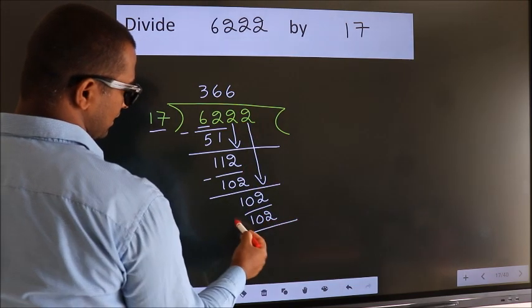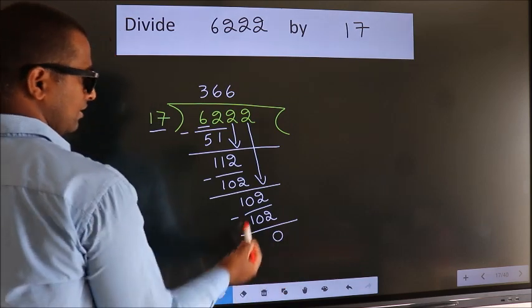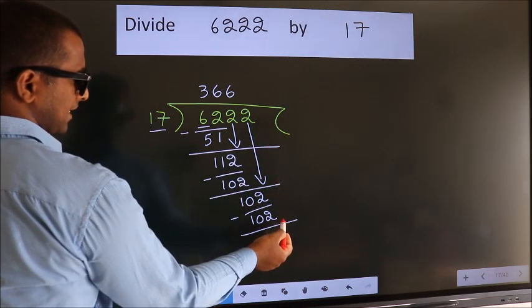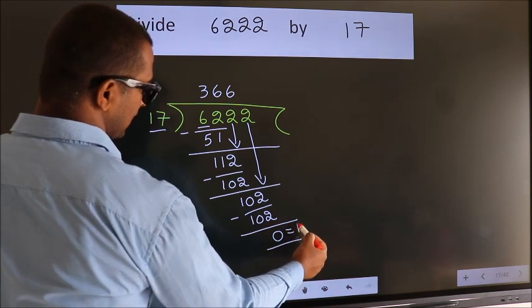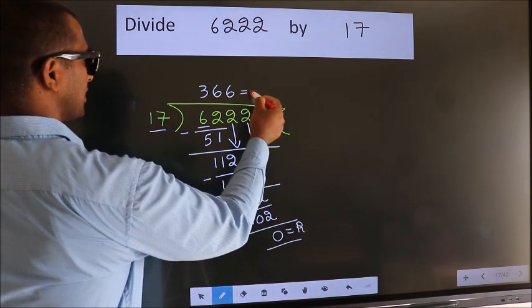Now we subtract. We get 0. No more numbers to bring it down, so we stop here. This is our remainder. This is our quotient.